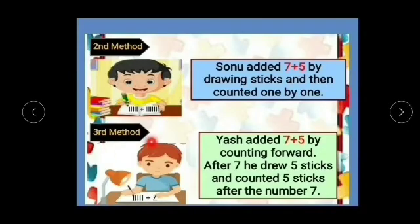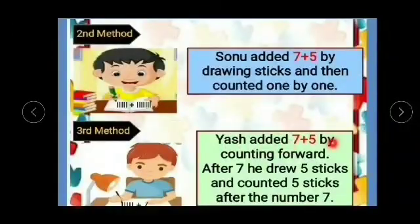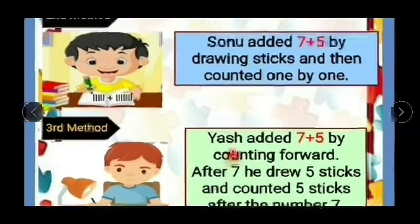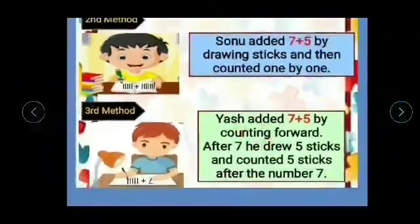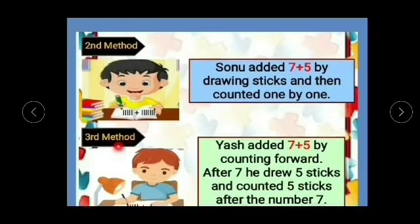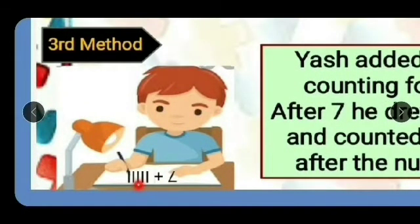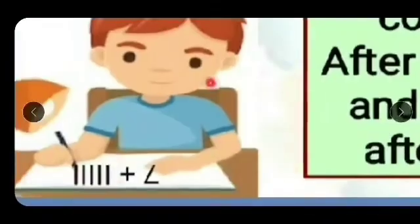Third method. This boy is Yash. Yash added 7 plus 5 by counting forward after 7. He drew 5 sticks and counted 5 sticks after the number 7. So he wrote the greater number 7, after that he drew 5 sticks. Let's see how he counts.